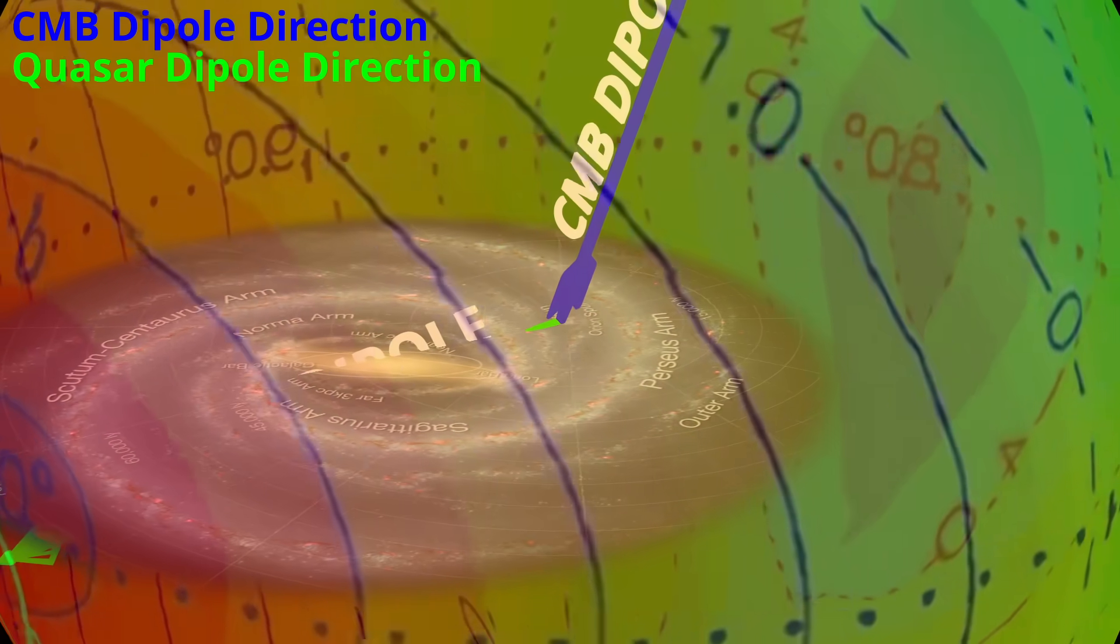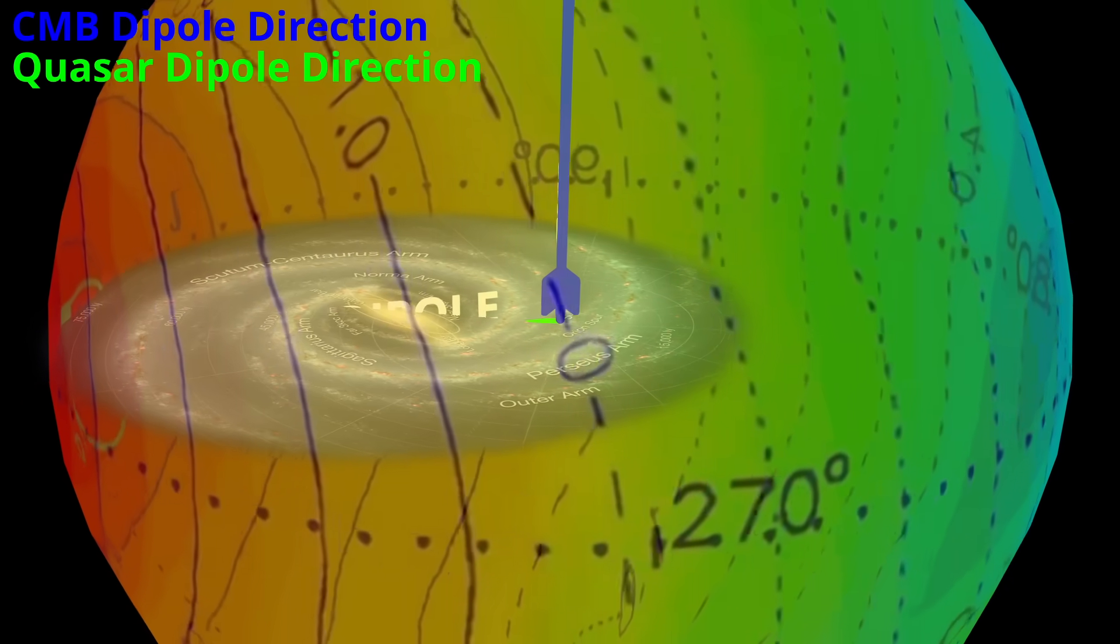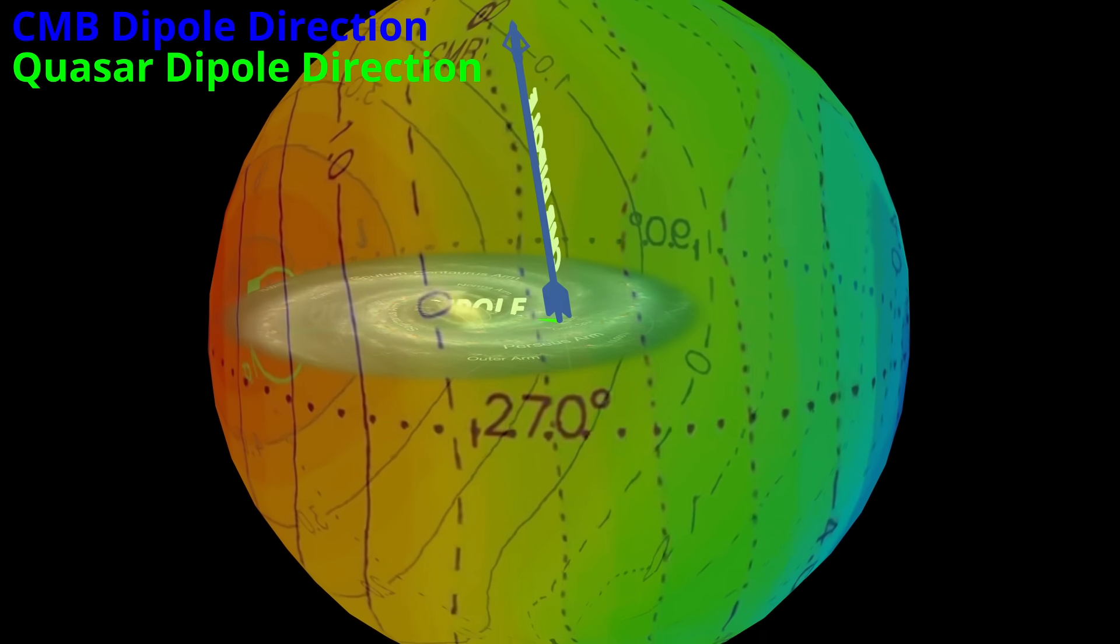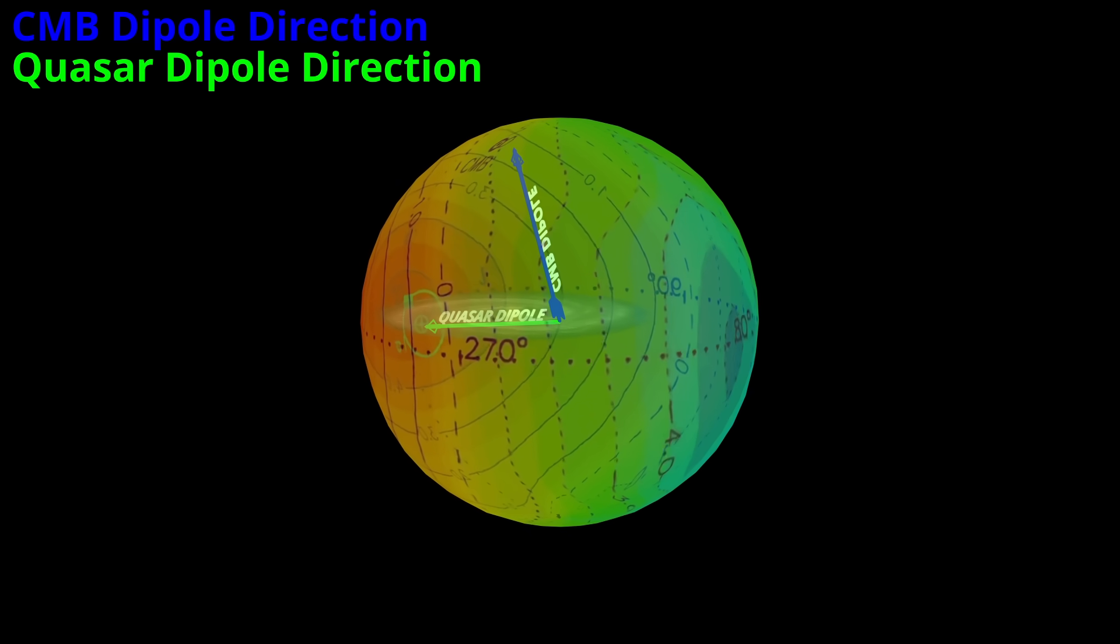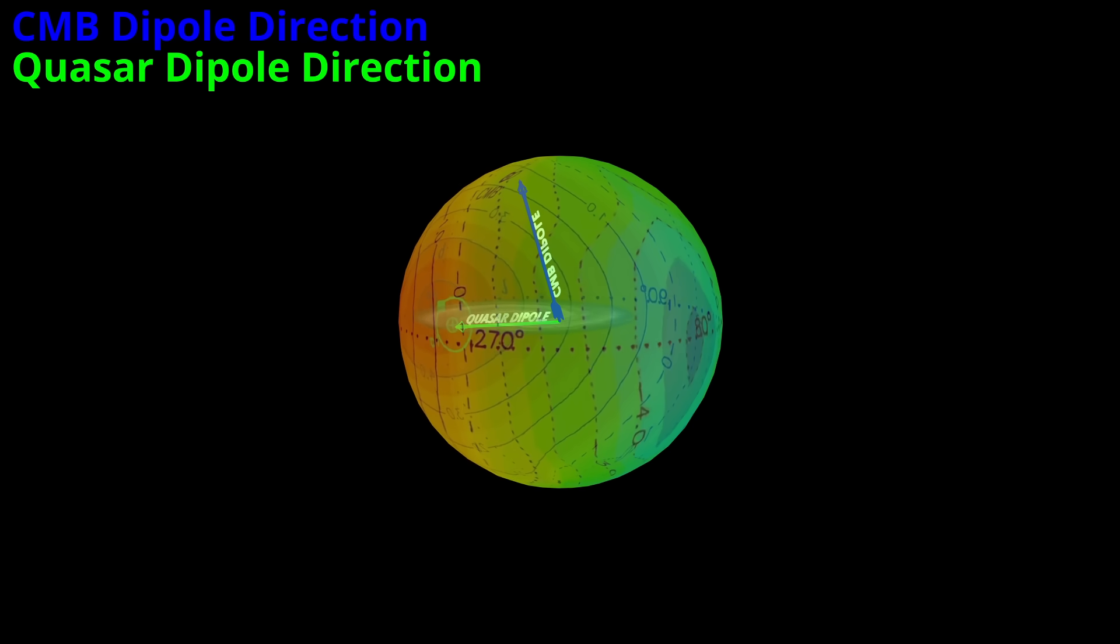The final possibility is more troubling. That the quasars themselves are not isotropic. That one side of the universe is generally different from the other. Yet, this would mean abandoning the cosmological principle.